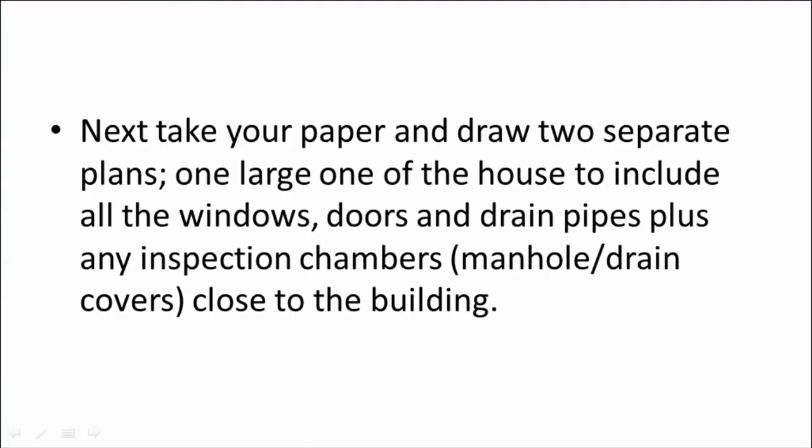Next, take an A3 pad of paper and draw two separate plans. One large one of the house to include all the windows, doors, drain pipes, plus any inspection chambers or manhole covers that are close to the building. Only include the part of the house which is relevant to the garden plan, either the front or the back. Don't include it unless it's relevant to the garden plan.